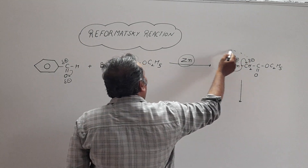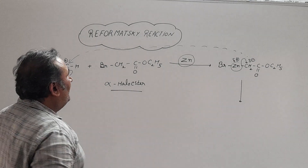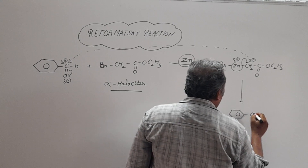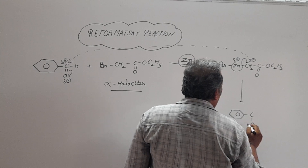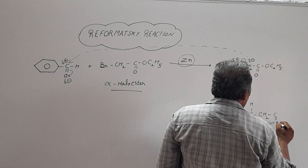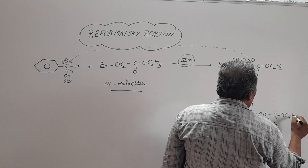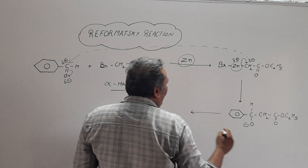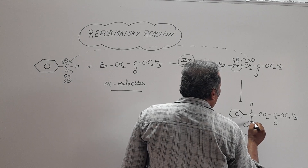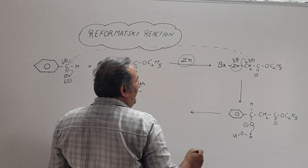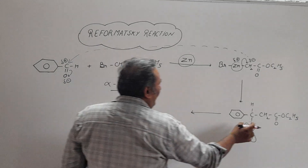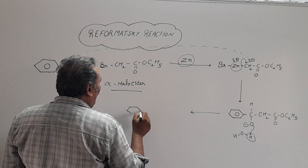This nucleophile will attack on the carbonyl carbon, giving an intermediate with O⁻, CH, CH₂, C=O, O, C₂H₅. When this intermediate reacts with a water molecule, it gives its lone pair of electrons to an H atom — abstraction of H — and the O⁻ gets converted into an alcohol group.